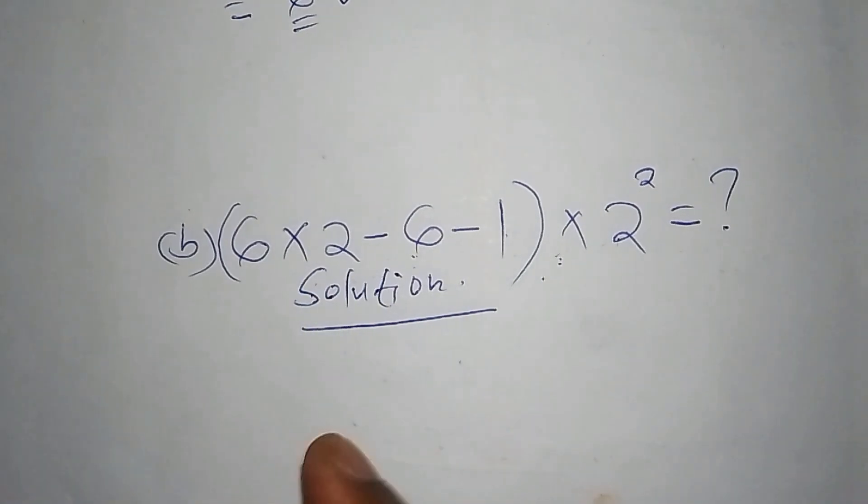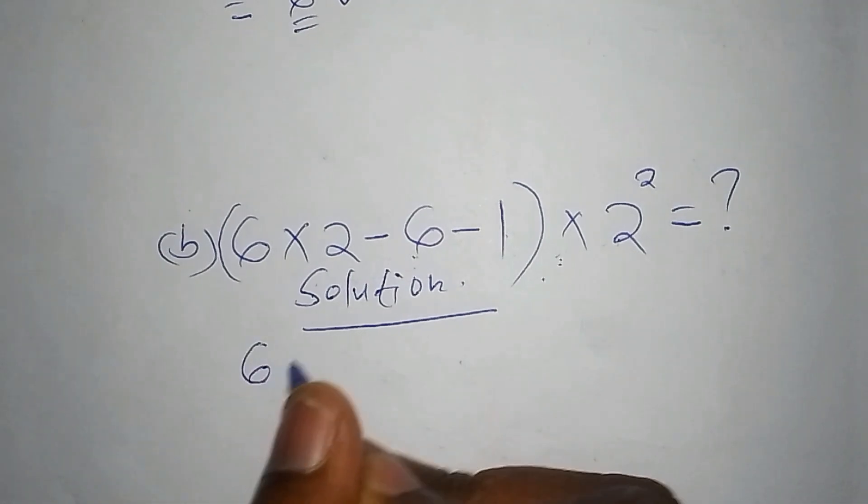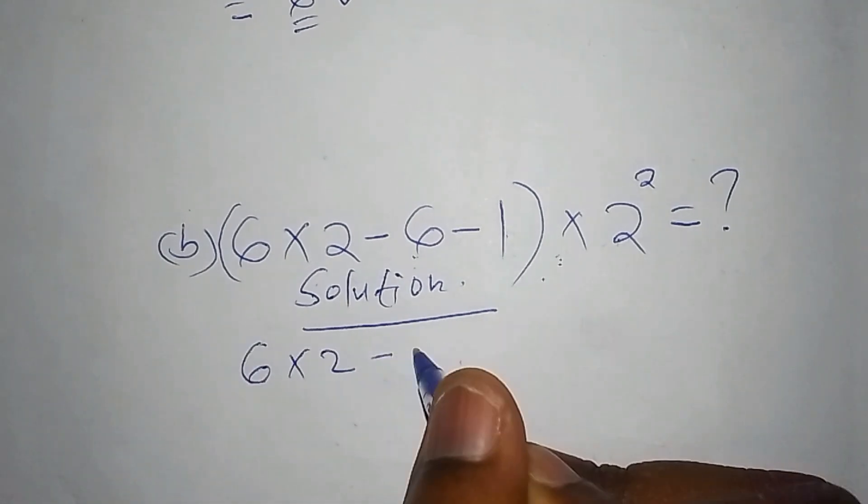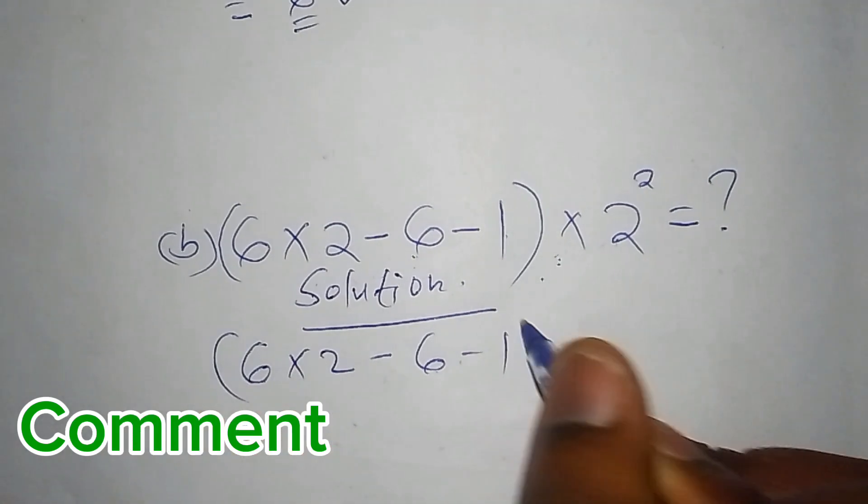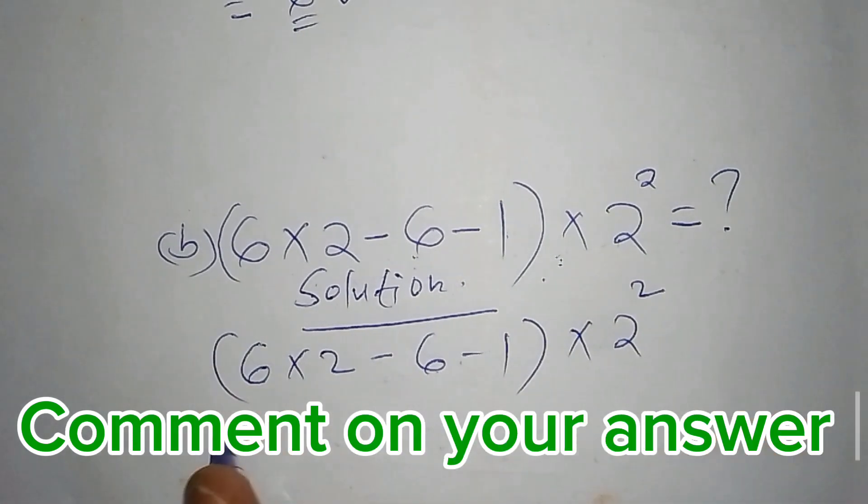So our first step shall be: we shall have 6 multiply by 2 subtract from 6 minus 1, then you close the bracket, 8 multiply by 2 raised to power 2. So the first step shall be...